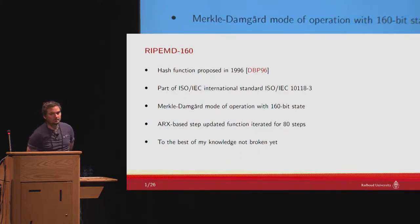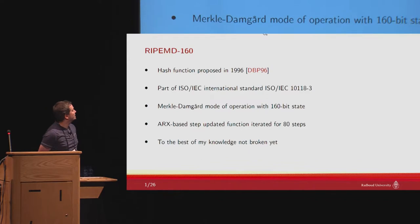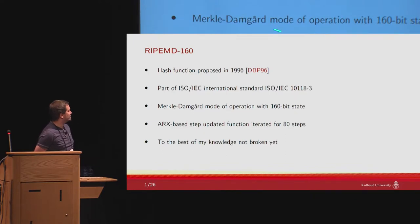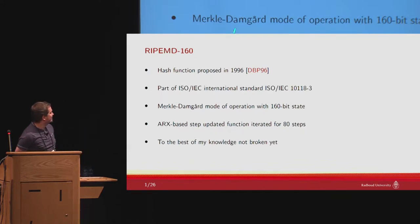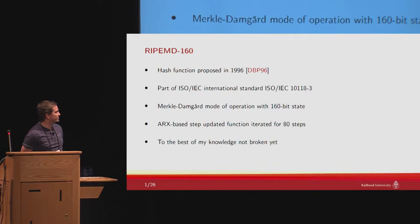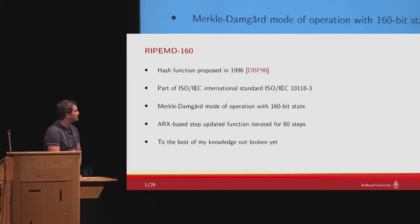Why do we look at RIPE MD 160? The primary two reasons are that it's quite old — it's a hash function proposed in 1996 — and that it's standardized as part of an ISO international standard. It's a hash function created in the 90s, so it uses the Merkle-Damgård mode of operation with a 160-bit state. It has an ARX-based step update function which is iterated for 80 steps, and to the best of my knowledge it's not broken yet and it will not be broken after the presentation.